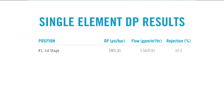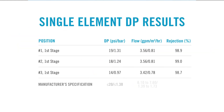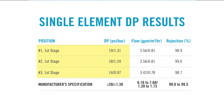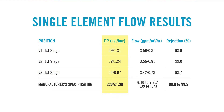As increased delta pressure was observed in the first stage of the RO system, the site sent the first three elements from the first stage for individual performance testing at the Avista facility. This gave us a performance snapshot to determine which elements were most affected by the fouling problem. We see that the delta pressure is highest for the first element in their first stage, and as you travel through the system, the delta pressure becomes more manageable, even though it's still elevated. We expect delta pressure of clean elements to be between 3 and 5 psi.